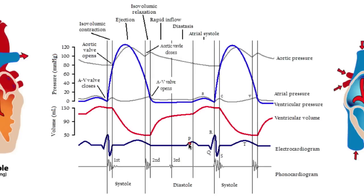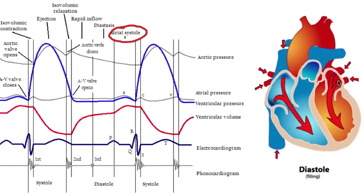The P wave represents atrial depolarization, which is going to cause atrial contraction — or atrial systole. What that does is push the last bit of blood from the atria into the ventricle — from the left atrium to the left ventricle when it contracts. And that is why we see this quick increase in the amount of blood in the left ventricle, so we get an increase in ventricular volume right after the atria contract.